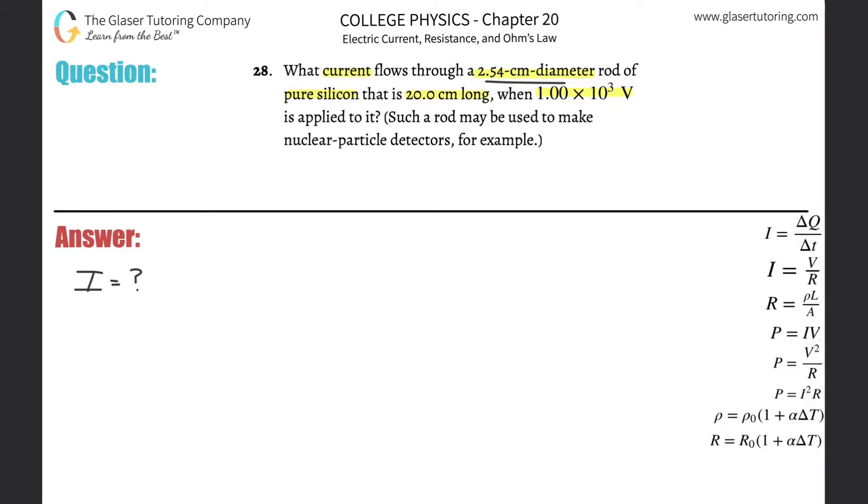Okay, they tell me the diameter now of the rod of silicon. Now we've seen in the prior problems, check out I think 24 through 27. We've seen now that if they're giving us the diameter, we can surely find the cross-sectional area, which is what is really important here. We need to know the cross-sectional area of the wire in order to relate that to resistance.